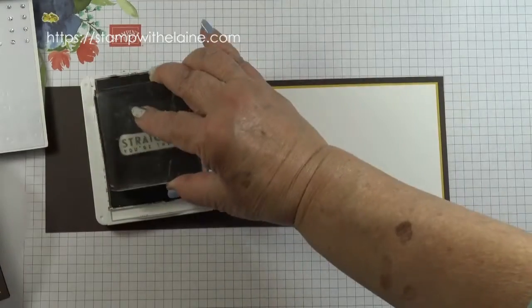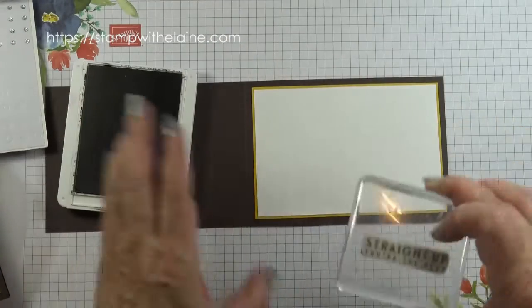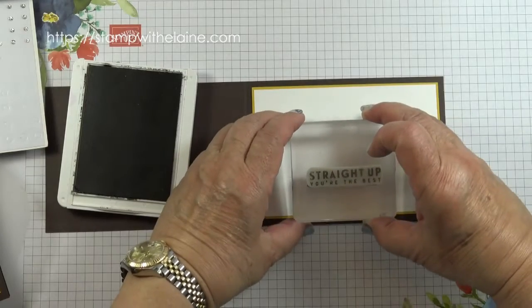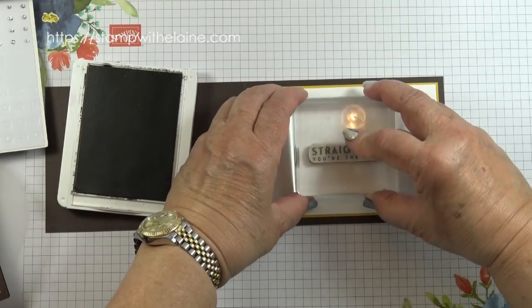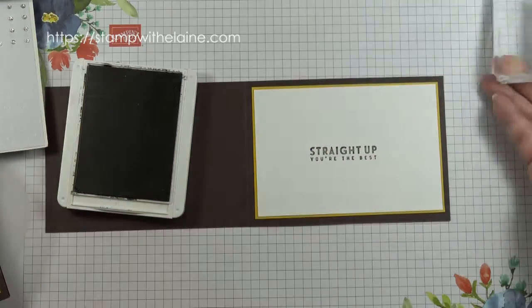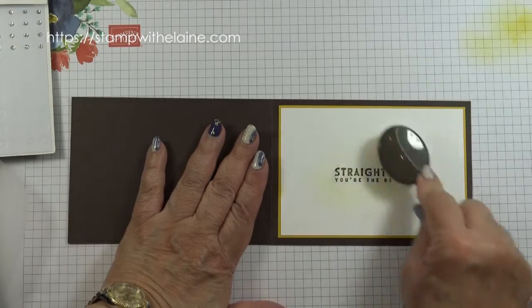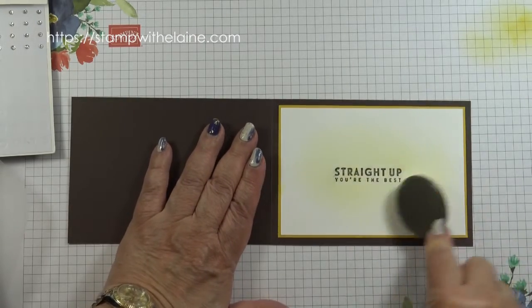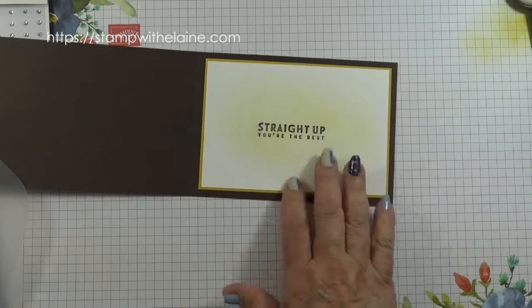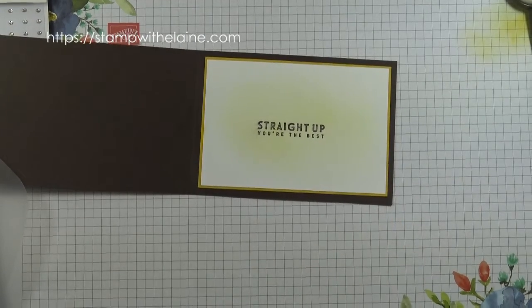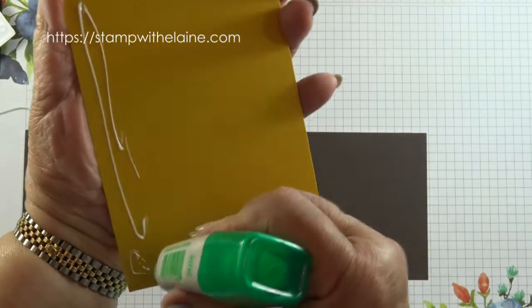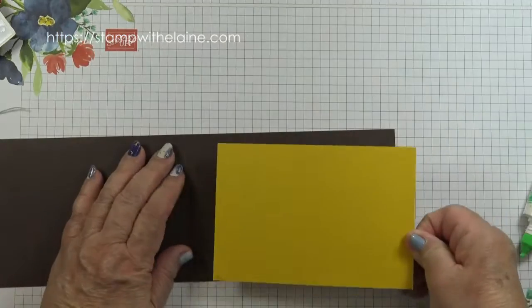Then take the sentiment straight up you're the best and I've lined it up. That's all you need and that's the inside done. Now I'm going to glue this Mango Melody piece first to the card front.